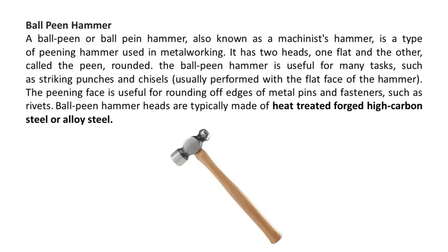A ball peen, or ball peen hammer, also known as a machinist's hammer, is a type of peening hammer used in metalworking. It has two heads: one flat and the other, called the peen, rounded. The ball peen hammer is useful for many tasks such as striking punches and chisels, usually performed with the flat face. The peening face is useful for rounding off edges of metal pins and fasteners such as rivets.